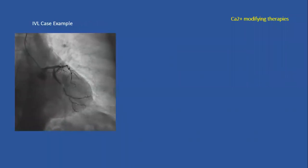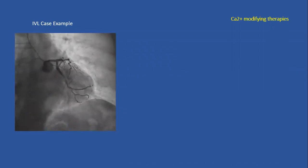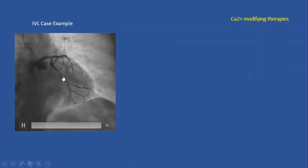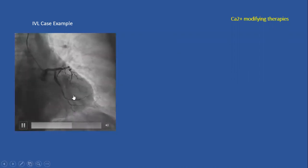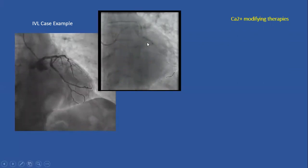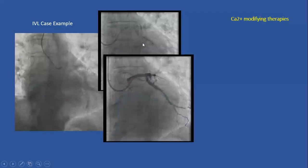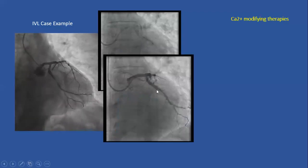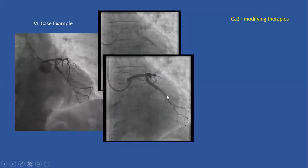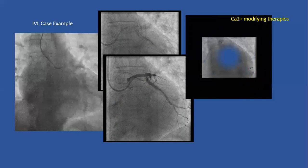Here is an example of IVL: a 71-year-old diabetic smoker with hypertension and dyslipidemia — a typical non-STEMI patient with a culprit lesion in the circumflex that did not appear significantly calcified on angiogram. We crossed the lesion, pre-dilated with a balloon, and noted some under-expansion that was not fully recognized, so a stent was deployed. The result showed stent regret with significant residual stenosis distally — an unacceptable result likely to lead to stent thrombosis and occlusion.